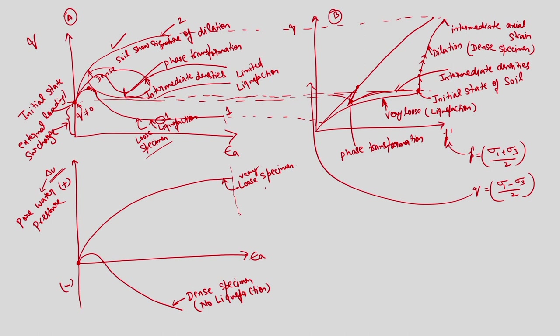This corresponds to the very loose specimen: though initially it showed some sign of peak value, overall the nature represents contractive behavior, indicated by continuous increase in pore water pressure — also an indication of liquefaction. Dense specimen: no liquefaction. Very loose specimen: liquefaction. For limited liquefaction, taking the phase transformation into account, intermediate density samples initially took load, contractive behavior was there, reached peak value, subsequently there was increase in pore water pressure.